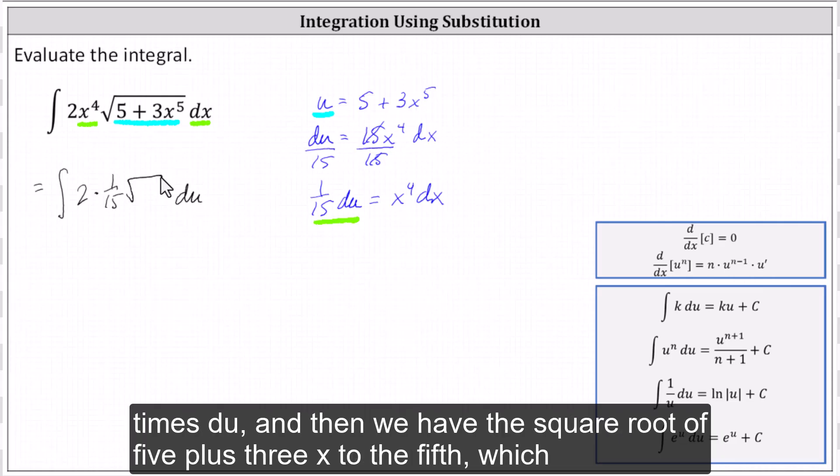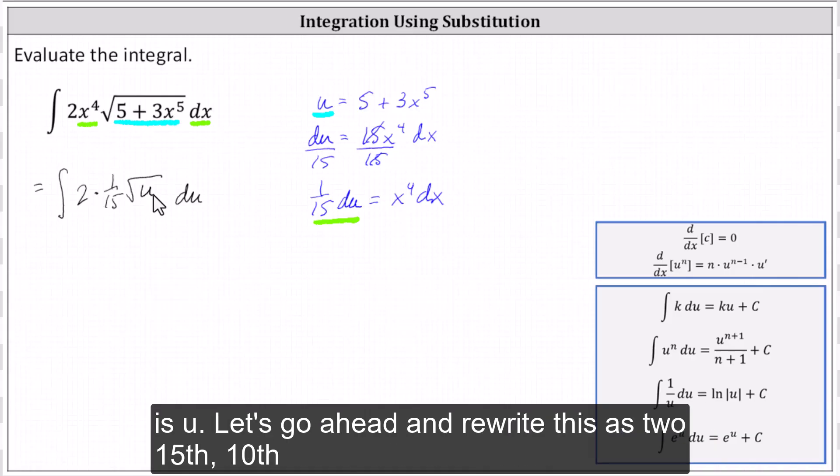And then we have the square root of 5 + 3x^5, which is u.